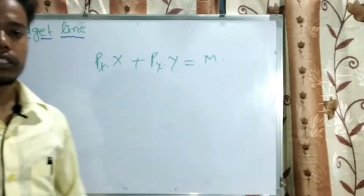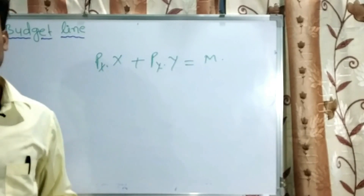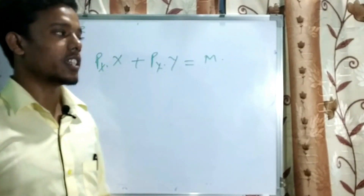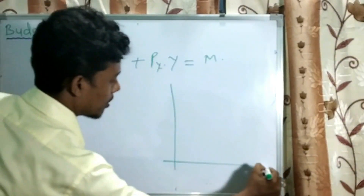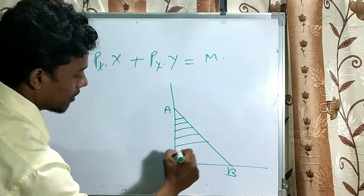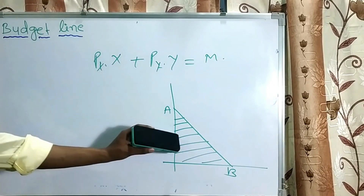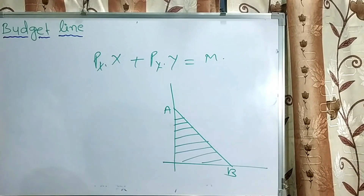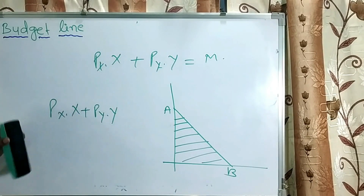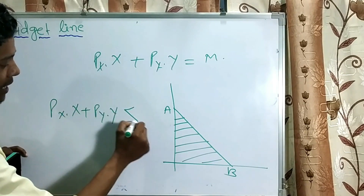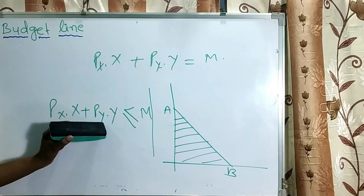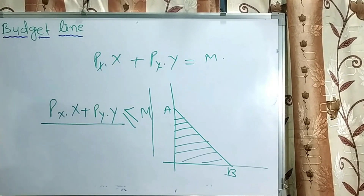Another concept is budget constraint. The budget constraint states the limitation of your income level. Suppose your budget line is AB — the budget constraint refers to the area within that line. It means you can purchase any combination within this area. It is shown by the equation Px·X + Py·Y ≤ M, meaning your expenditure should be less than or equal to your income.